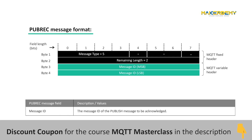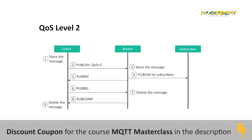The fifth packet is the PUBREC packet, also known as the publish received packet. The PUBREC packet is an acknowledgement packet sent by the broker to a publisher only when the publisher publishes a message with QoS level 2. QoS level 2 guarantees that each message is received only once by the intended recipients. It doesn't have any payload.